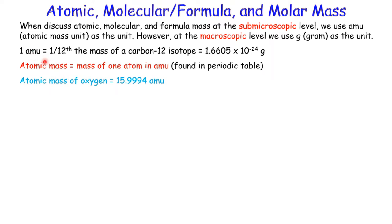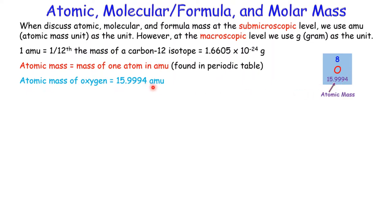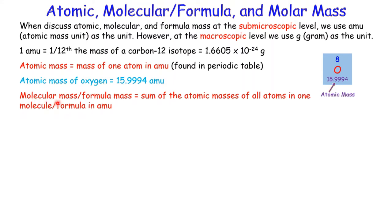Atomic mass is the average mass of one atom in AMU, which you can find on the periodic table beneath the element symbol. Molecular mass — or formula mass for ionic compounds — is the sum of atomic masses of all atoms in one molecule or one formula unit, also in AMU.